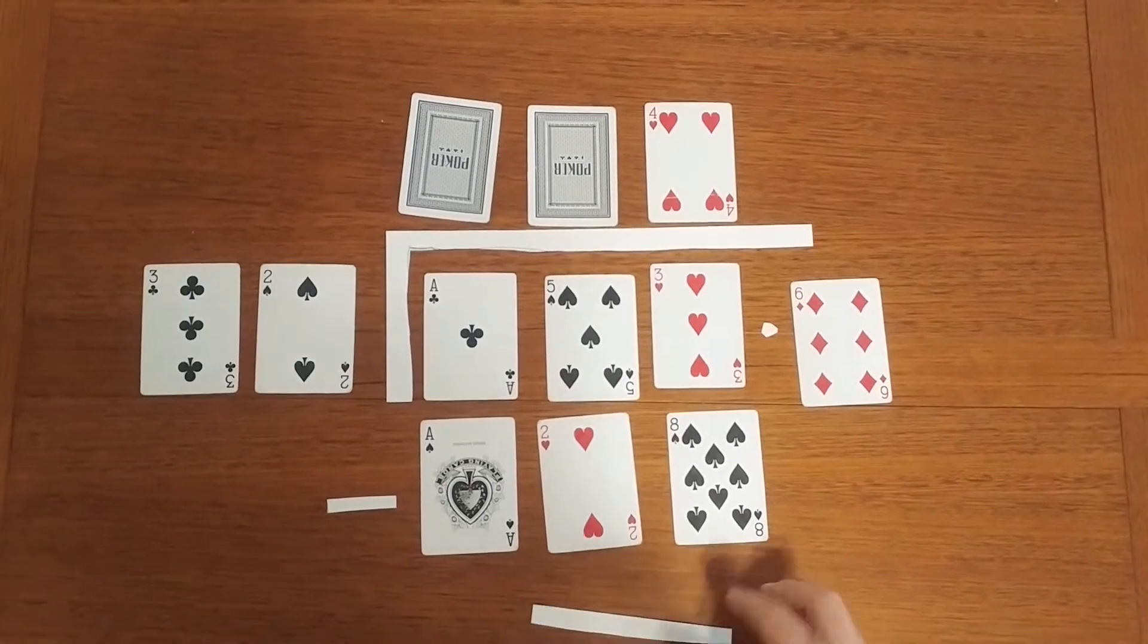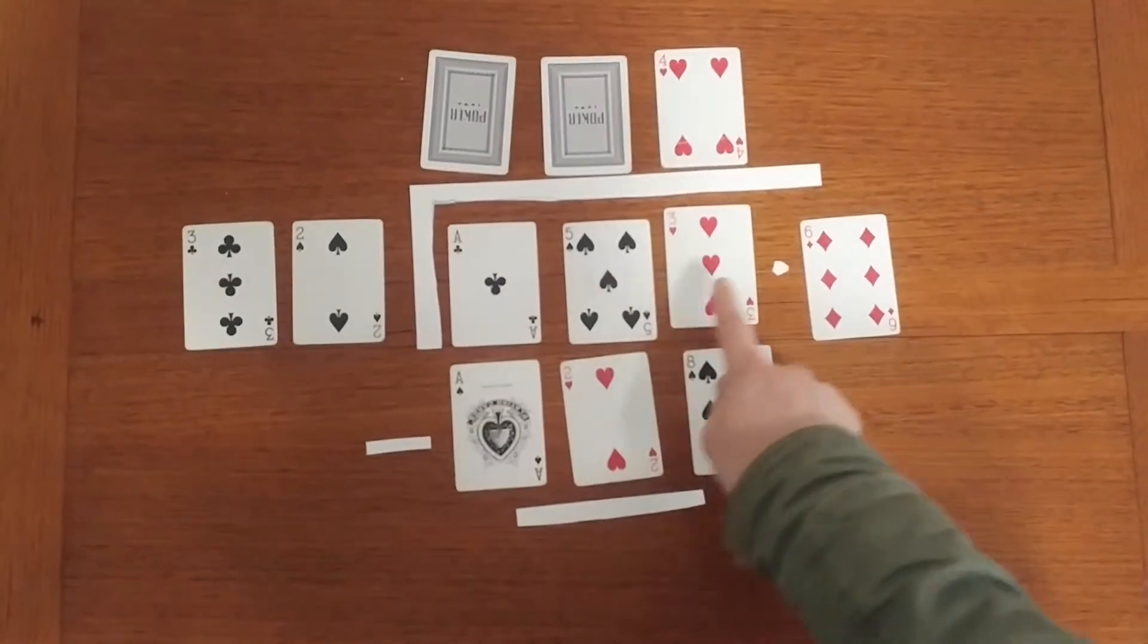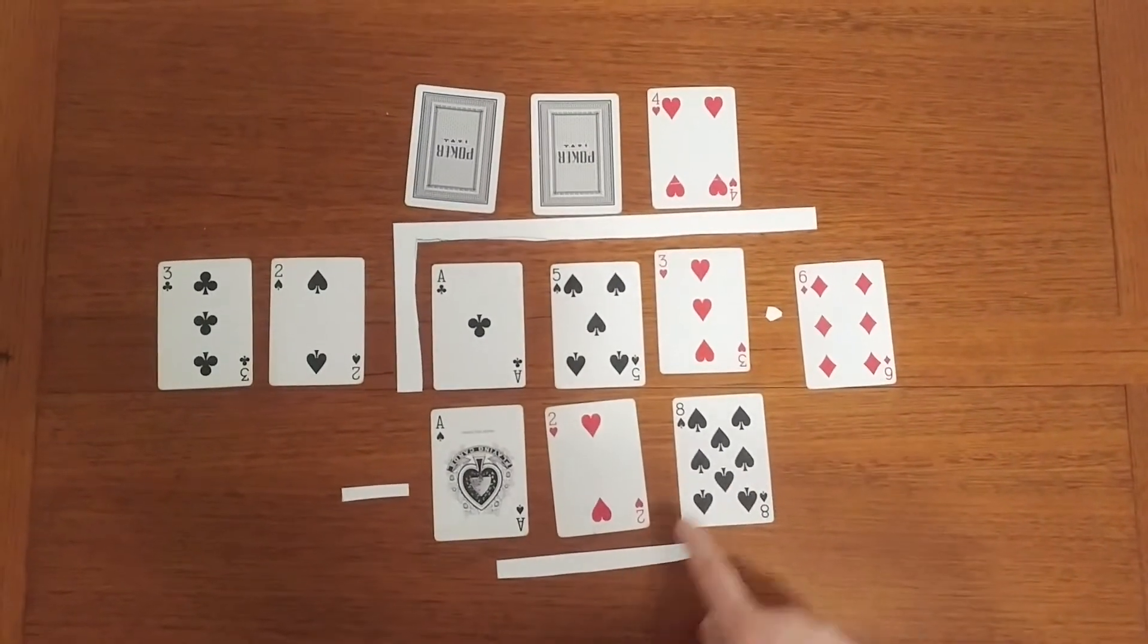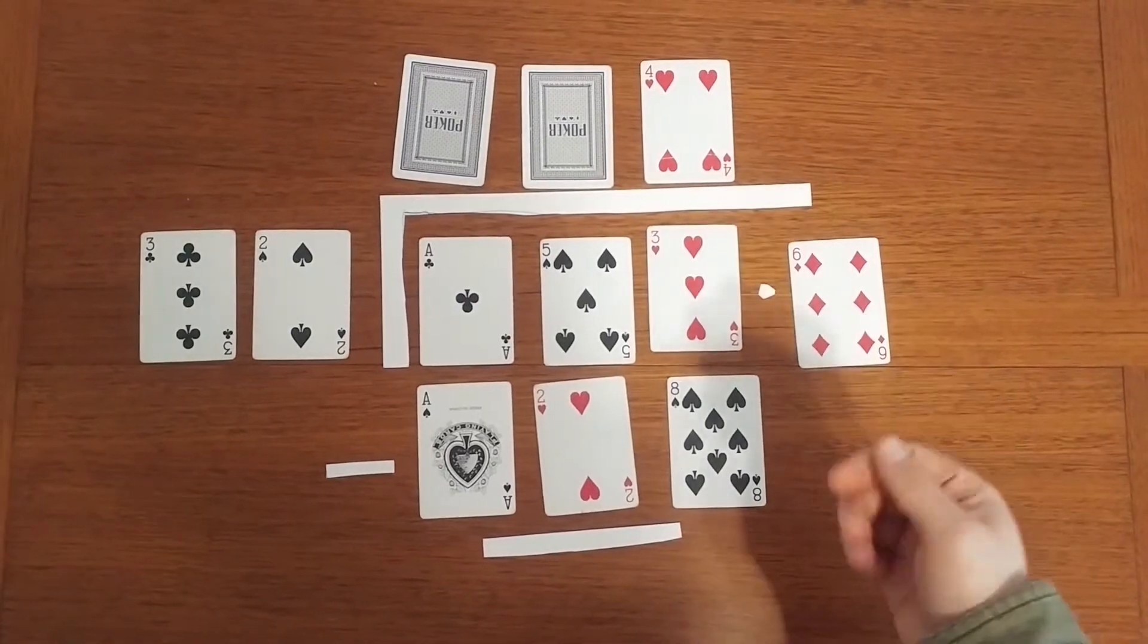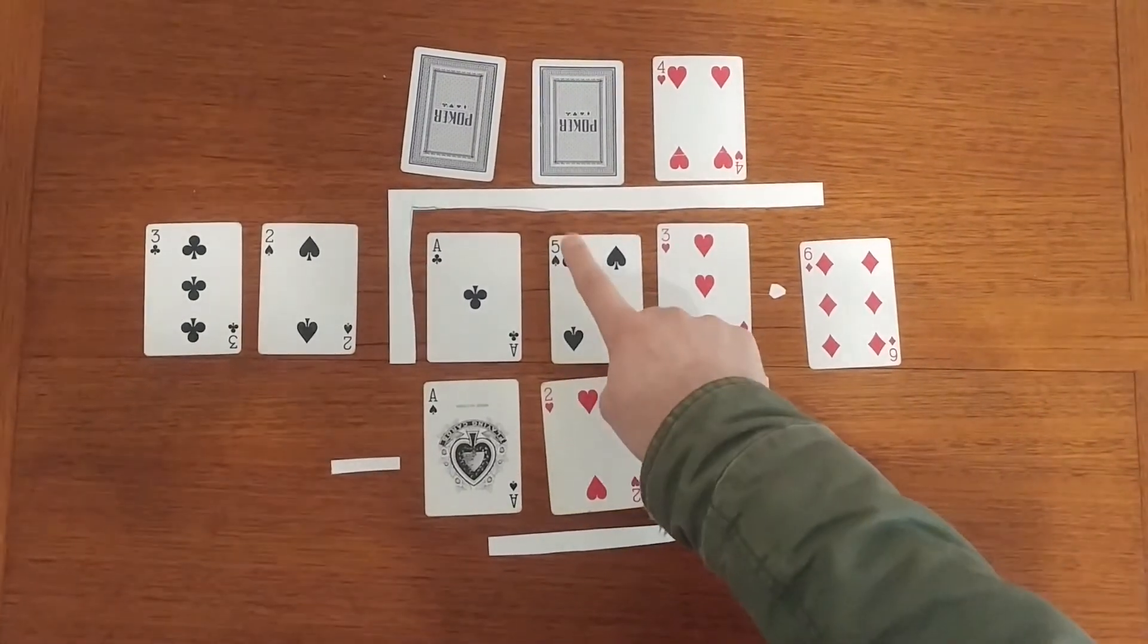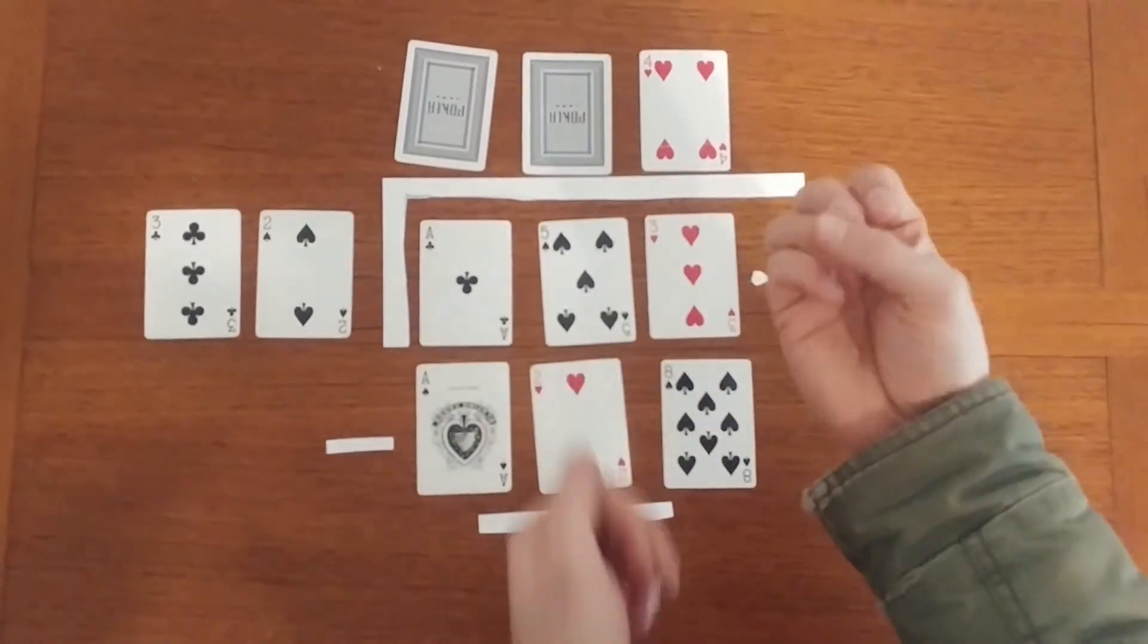So our question is 153 take away 128. So we're going to go 3 take away 8. We can't do that, it's not enough. So we're going to need to regroup. We're going to go to 5 and make that a 4 and now make that 13.